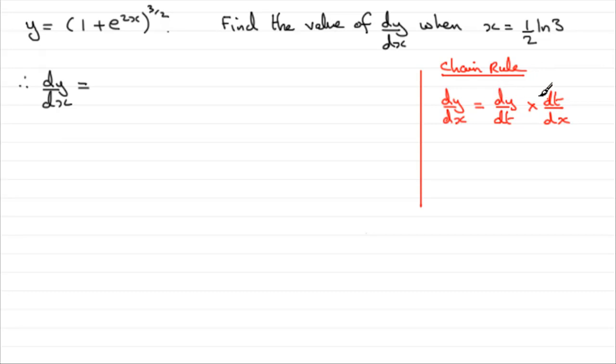So how does this work? Essentially, we're going to think of this as y equals t^(3/2), where t is (1 + e^(2x)).